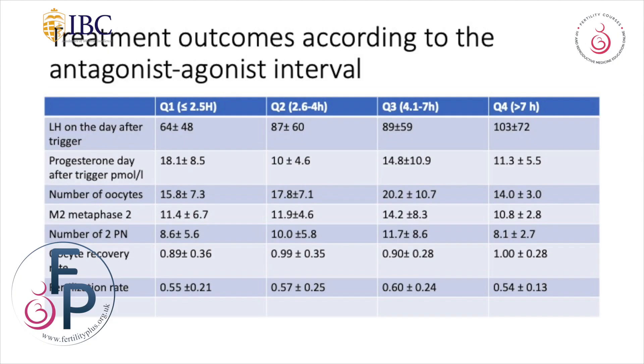Looking at the results: LH on the day after trigger, progesterone day after trigger, number of oocytes, number of metaphase 2 oocytes, number of 2PNs, oocyte recovery rate, and fertilization rate — in all these groups, statistically there was no difference. Irrespective of when the antagonist and agonist were given, the chance of getting oocytes and a good fertilization rate was exactly the same.